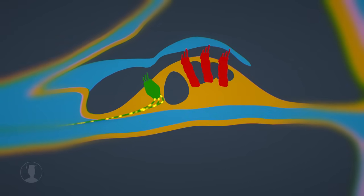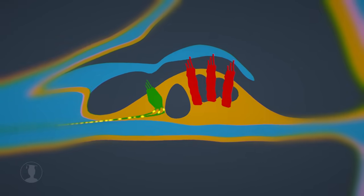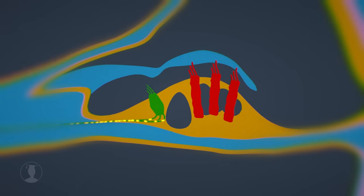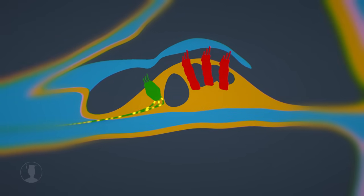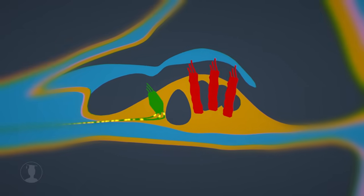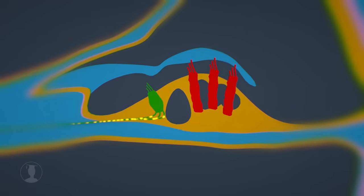This increases the movement of the basilar membrane and thus the flow of fluid, which causes the hairs of the inner hair cells to move more strongly. This enables us to hear even soft sounds, as this mechanism amplifies the sound in the cochlea.